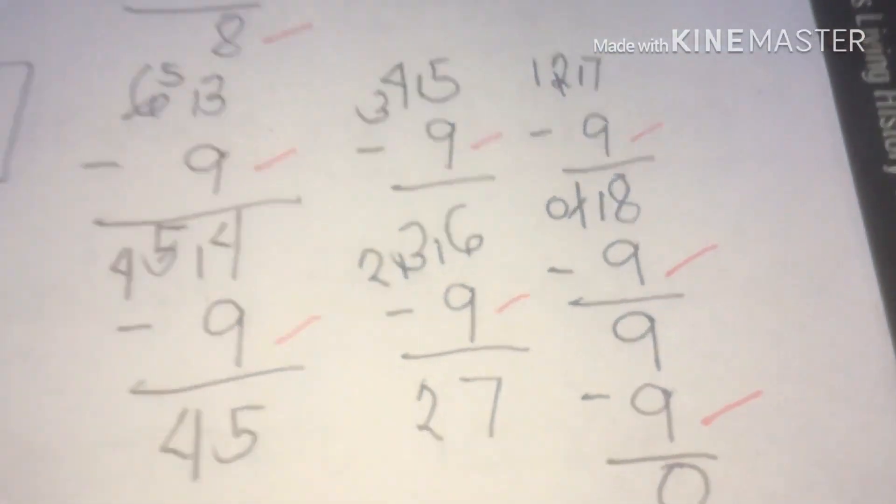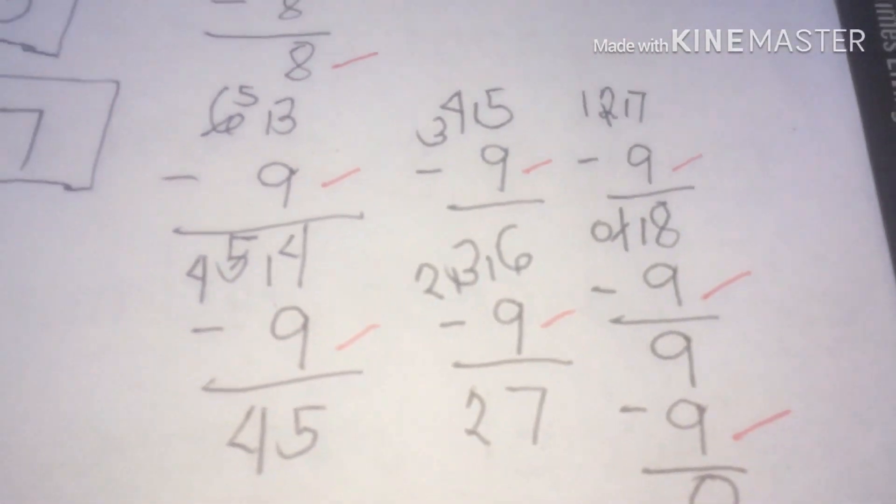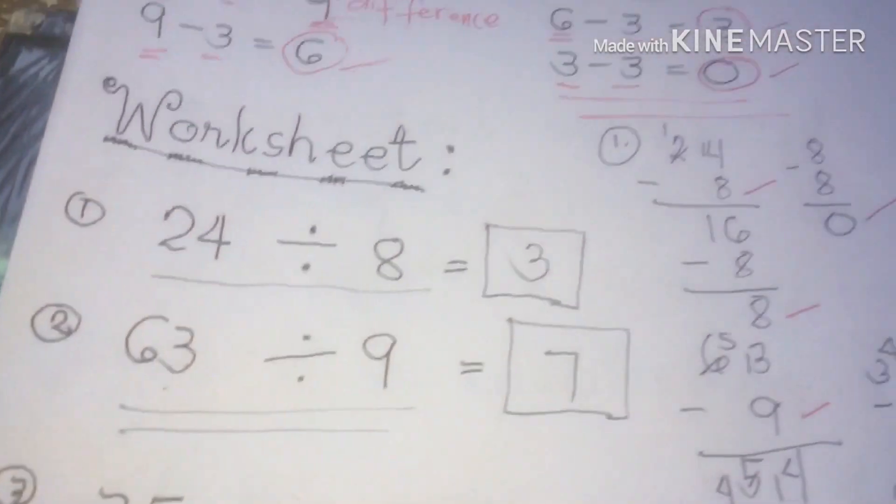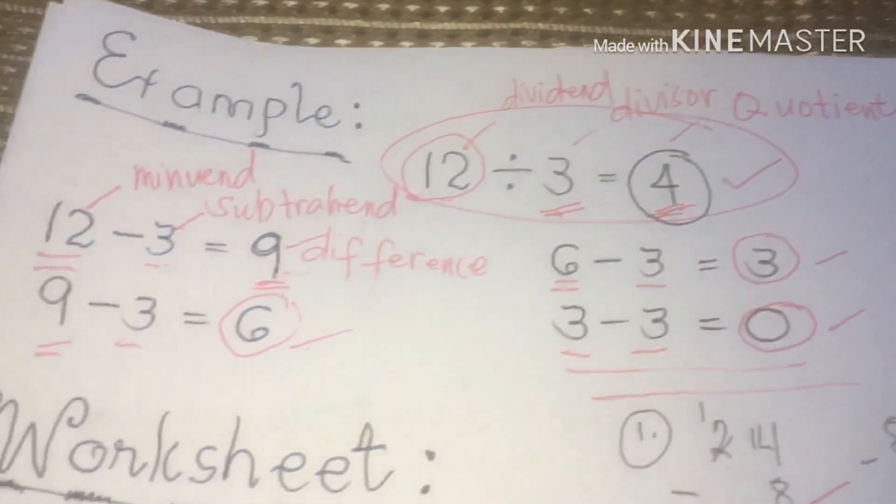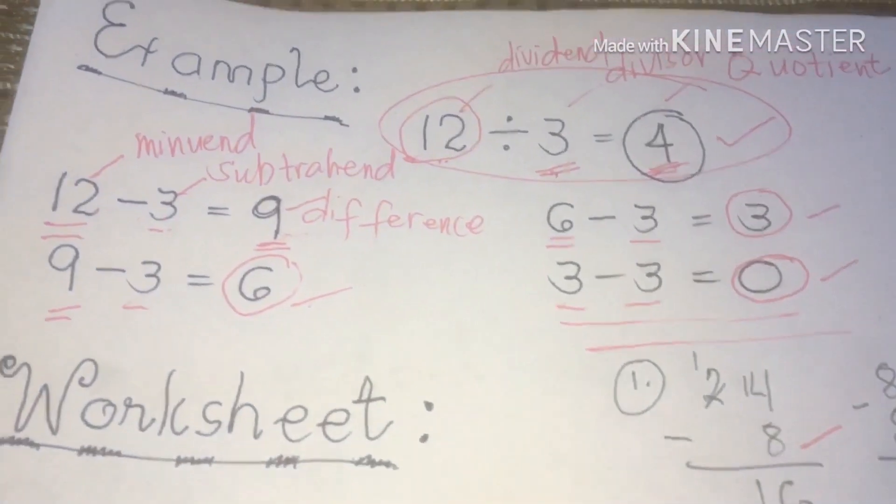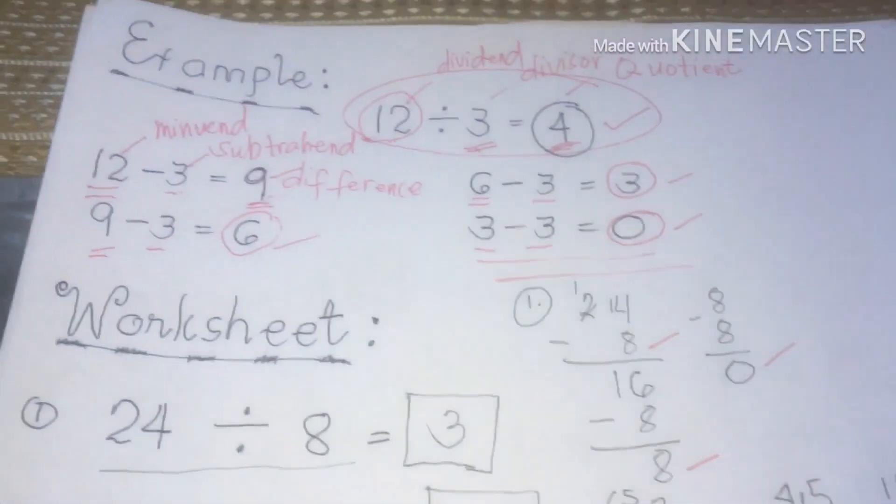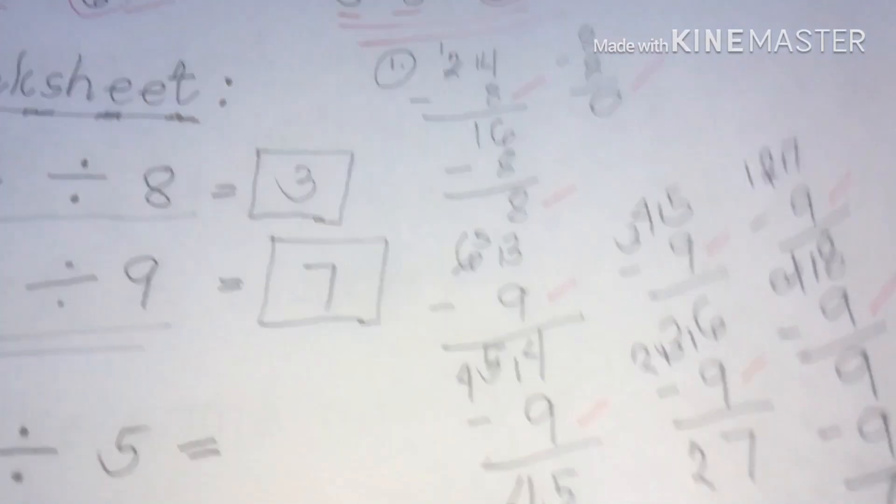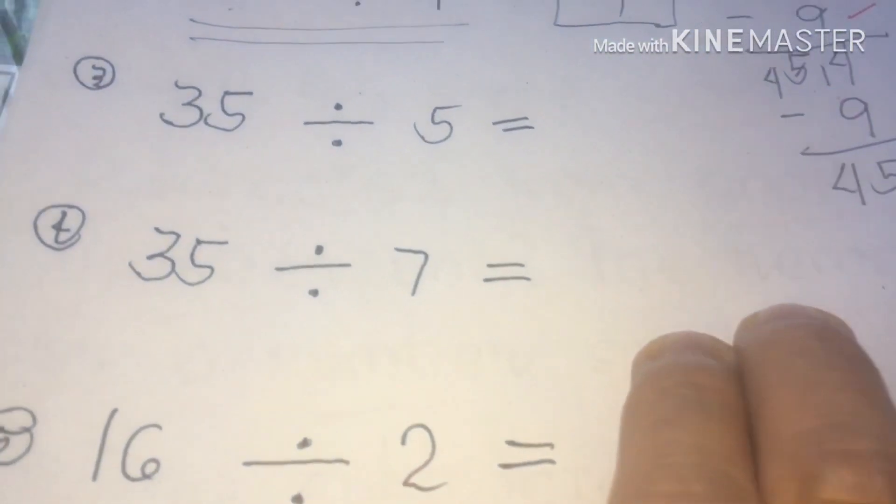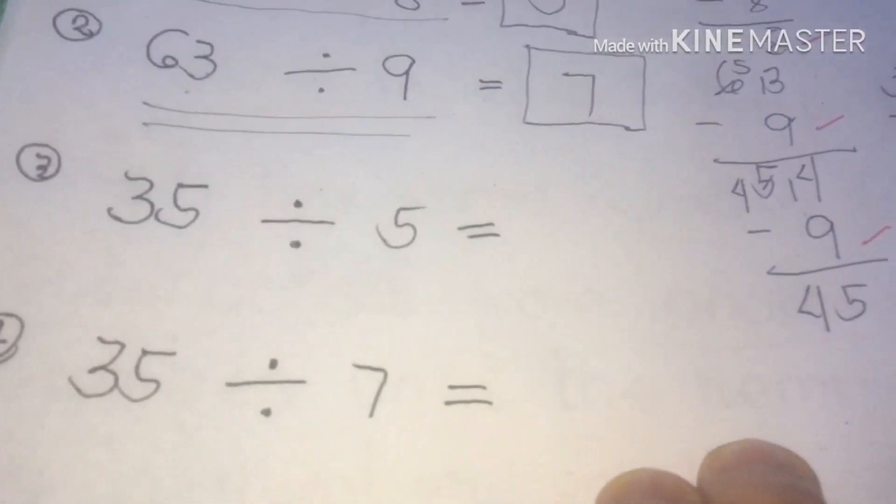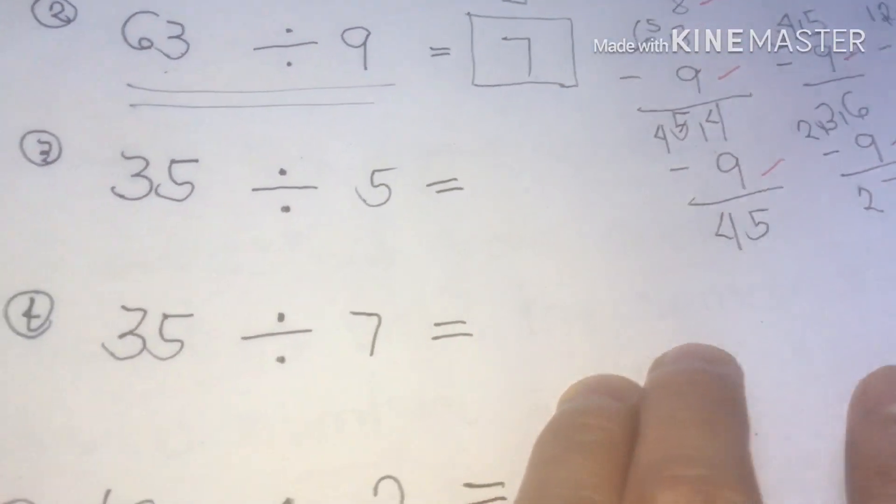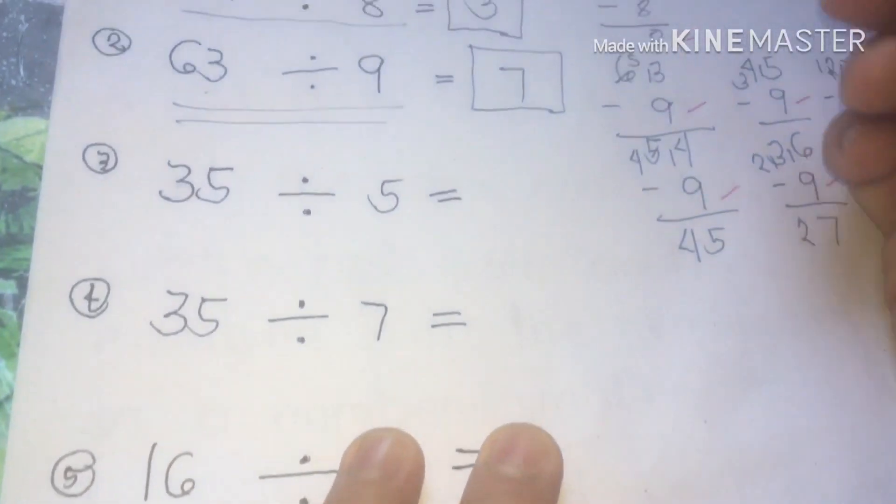So we are going to use our techniques in subtraction, my dear pupils. That is a very good way on how to answer divisions using subtraction method. Let's proceed class to number 4. 35 divide 7. Please follow my dear pupils or students.